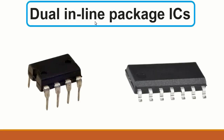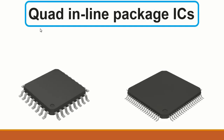The next component is ICs — integrated circuits — and there are many types. Here we have the dual in-line package, where the terminals are on both sides, that's why we call it dual. And here we have the quad in-line package, where the terminals are on four sides.